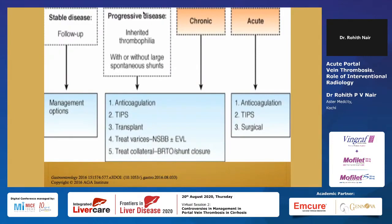There's a famous article published in Gastroenterology in 2016 that gave a very useful flow chart. It said stable disease — just follow up, manage, and discuss options with gastroenterologists, hematologists, and transplant surgeons. For progressive disease, consider anticoagulation plus or minus TIPS, and eventually transplant. For acute portal vein thrombosis, anticoagulation, TIPS, or surgical options were recommended.